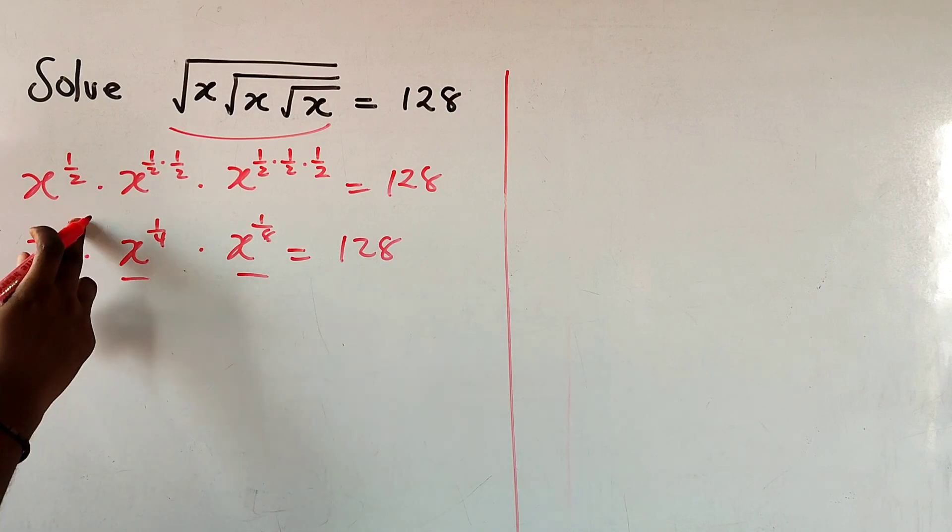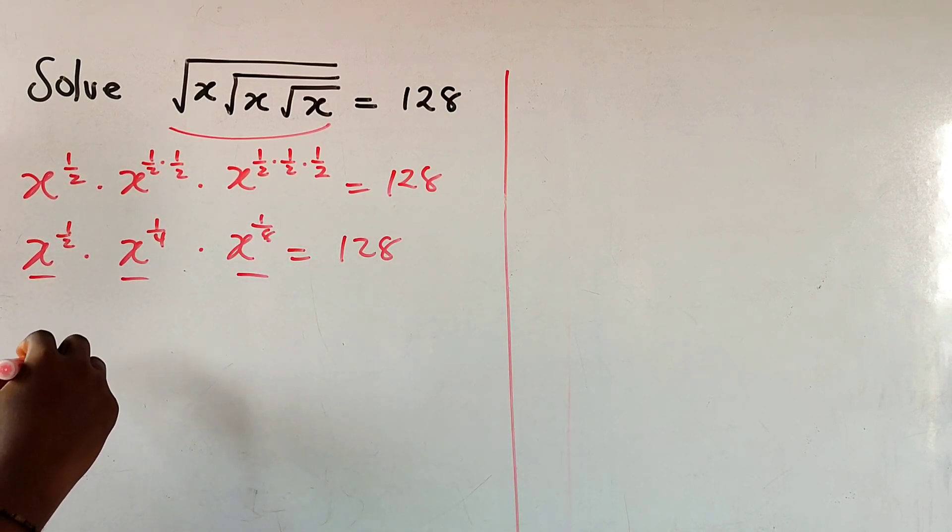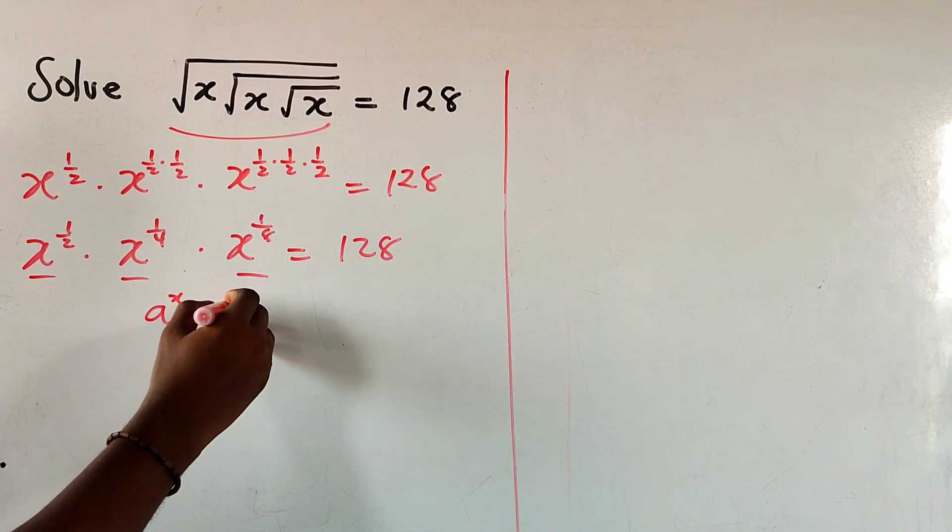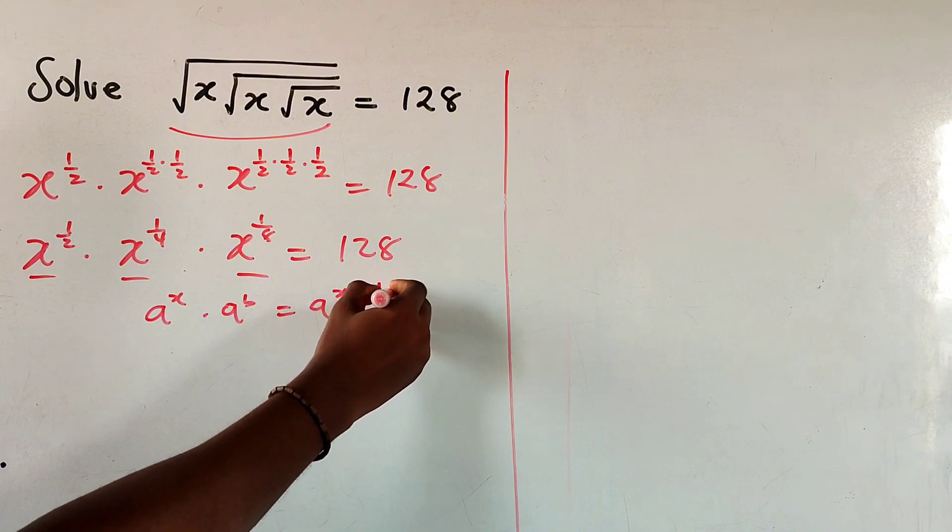Since we have the same basis, all we need to do is add the powers. That's the law of indices. If you have a to the x times a to the b, it's a to the x plus b.